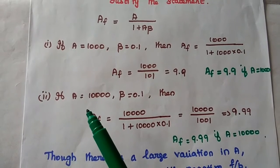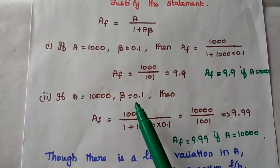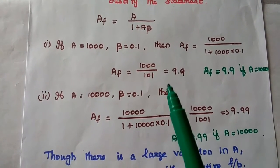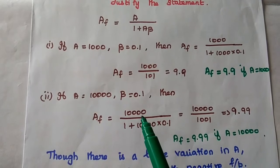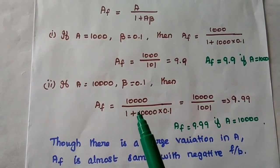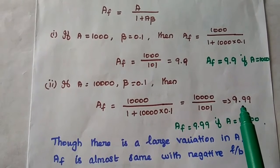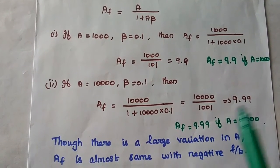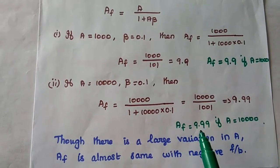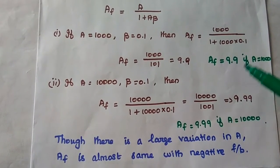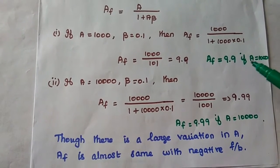In the second case, A = 10,000 with the same β = 0.1. Using negative feedback: AF = 10,000 / (1 + 10,000 × 0.1) = 9.99. The difference between the two feedback gains is only 0.09.